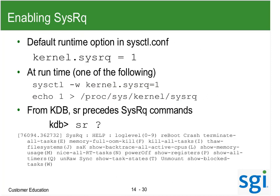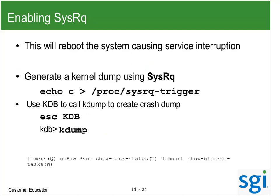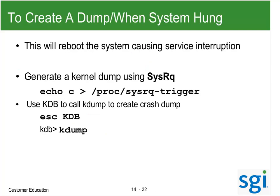SysRQ — you basically enable it and echo options into it, but there isn't a lot you can do from SysRQ. SysRQ was meant more for when KDB was not implemented — x86 hasn't had KDB in the past and hasn't had much with KDump/KExec either. The problem with using SysRQ to generate a kernel dump is that if the system is hung, you can't do it. So what you need to do is escape into KDB and then run KDump.